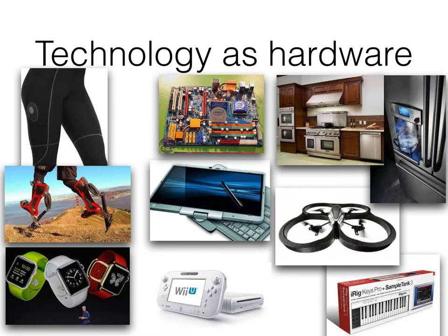Technology comes to us in various forms. The first example is technology as hardware, which includes appliances, gadgets and toys. In information technology, hardware is the physical aspect of computers, telecommunications and other devices. The term arose as a way to distinguish the box and the electronic circuitry and components of the computer from the program you put in it to make it do things. The program came to be known as software. Hardware implies permanence and invariability.